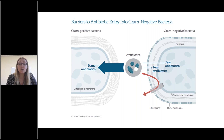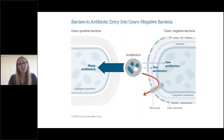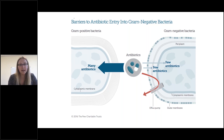One of the reasons gram-negative bacteria are so difficult to treat is shown in this slide from the Pew Trust. In gram-positive cells, it's relatively easy to get drugs to enter the cell through the single membrane structure. But in gram-negative bacteria, it's much more difficult and far fewer molecules are able to get through that double membrane structure, particularly because the outer membrane has a structure making it very difficult for many compounds to get across.